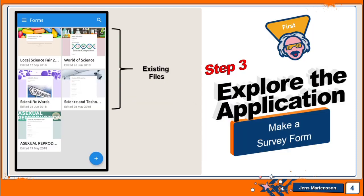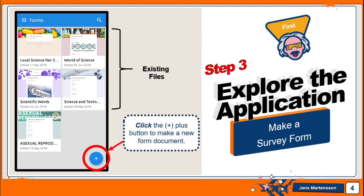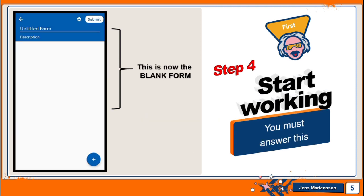Step three: explore the application. You can make a survey form and at the same time you can make it as a quiz form. These are my existing files — I have some registration forms, a quiz, another quiz, and a survey. Then click the plus button to make a new blank form document, so that you can customize and personalize your own Google Forms. This is what the blank form looks like, so let's start working.